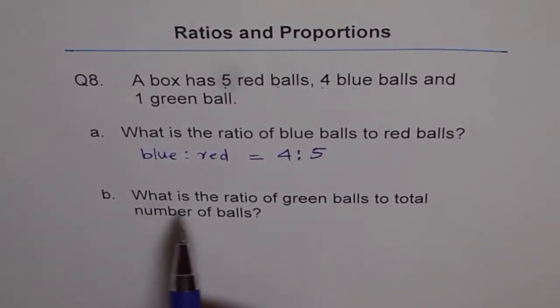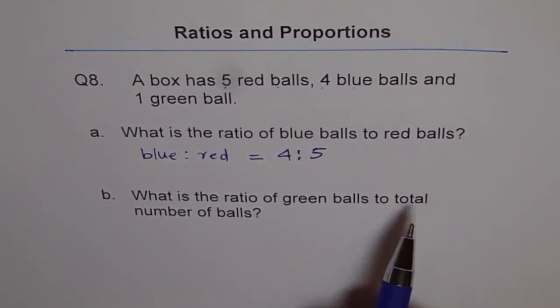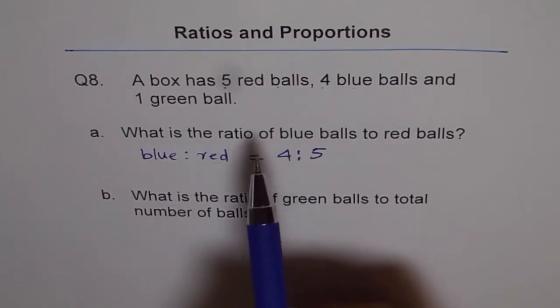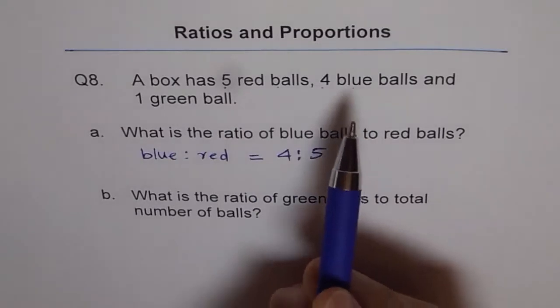Part B is, what is the ratio of green balls to total number of balls? Now we don't know what is the total. So let's add them together.